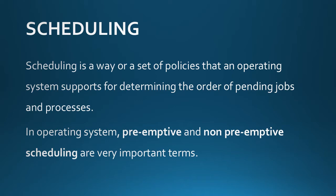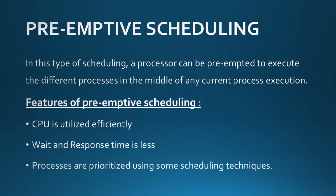In an operating system, pre-emptive and non-pre-emptive scheduling are very important terms. Let us understand them one by one. In pre-emptive scheduling, agar koi processor koi process execute kar raha hota hai, toh we can pre-empt it to execute a different process — that means hum uske middle mein kisi doosre process ko execute kar sakte hain.